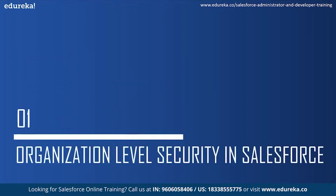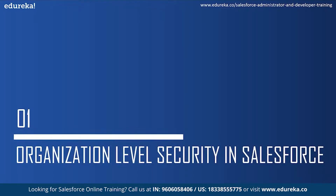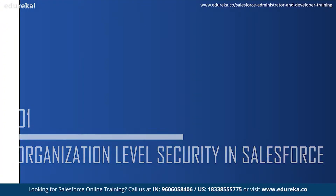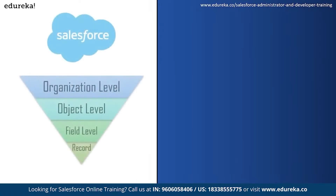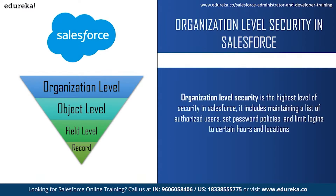Moving on to the first topic: what is organization level security in Salesforce? There are four levels of security in Salesforce — organization level security, object level security, field level security and record level security. Organization level security is the highest level. It includes maintaining a list of authorized users, setting password policies and limiting logins to certain hours and locations.